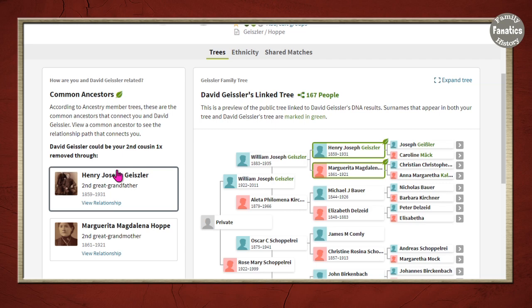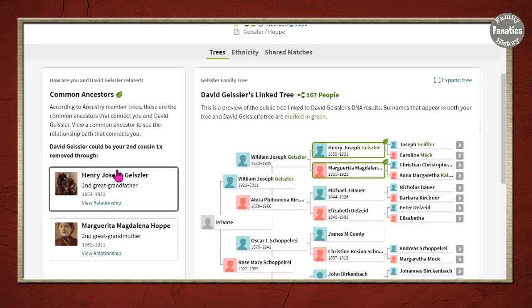Well, our most recent common ancestor is Henry Joseph and Margareta Magdalena Holpe. And that is where on his tree he has them and then I have them. They're one more generation back because I'm actually younger than this man. And my generation is a little bit one generation below. But this is our most recent common ancestor.